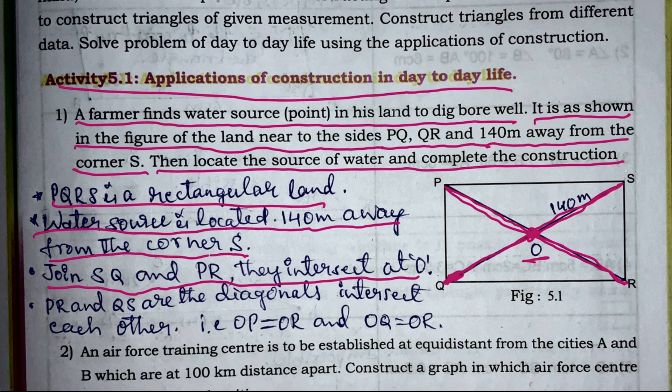These are called the diagonals of the quadrilateral. If it is a rectangle, these are the diagonals, and the diagonals intersect at O. The intersection points OP and OR are equal, and OQ and OR are also equal. These are the key concepts hidden in this diagram.